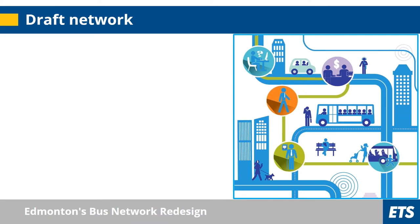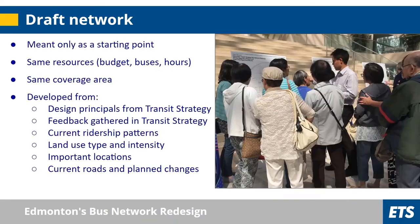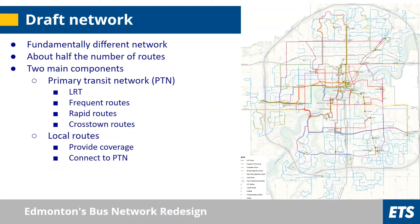Using these principles, we made an initial network — always knowing it would just be a draft and a starting point for conversation with the public. We used approximately the same resources and coverage area — not expanding, not cutting budgets. We took the feedback we'd heard along with current ridership data, land use information, important locations like hospitals and malls, existing roads, and planned changes to roads and urban form. We developed this draft network and brought it to the public, with routes color-coded by type to help people understand each route's purpose.